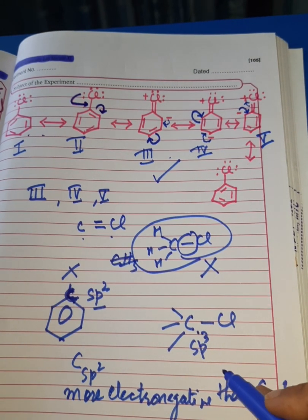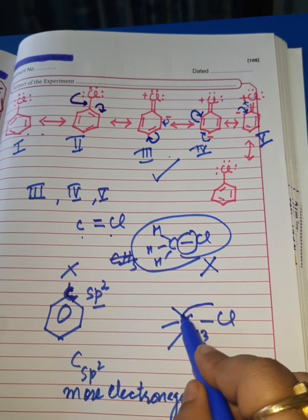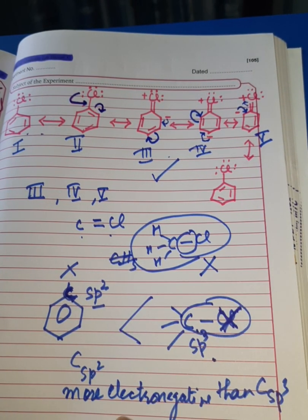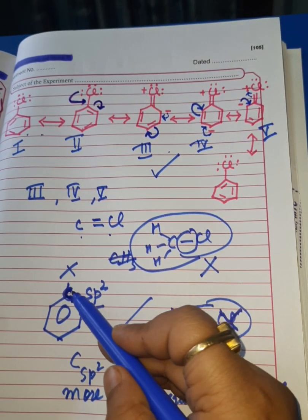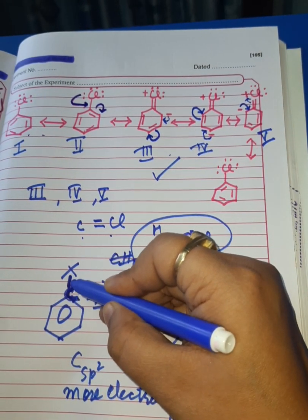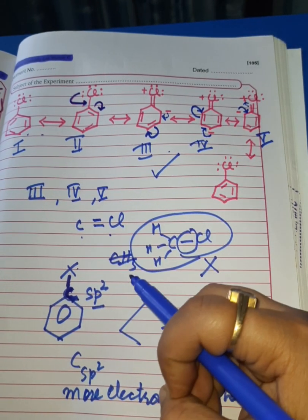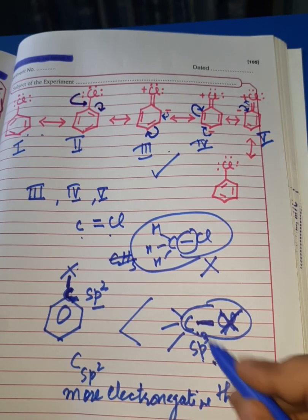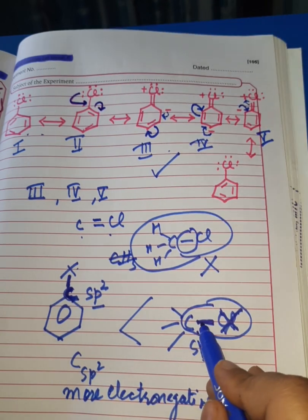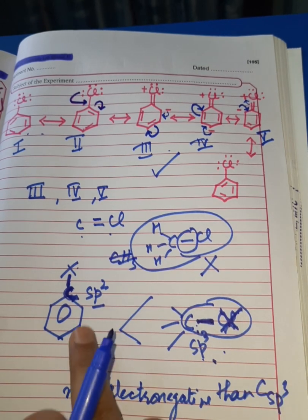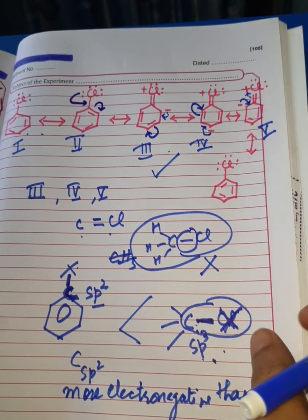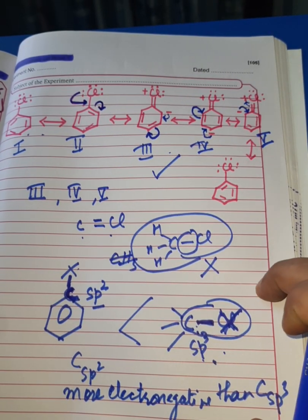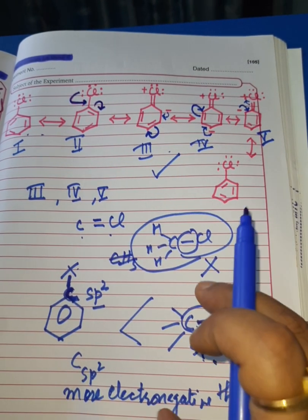In haloarenes, since the sp2 hybridized carbon is more electronegative, it will hold the shared pair of electrons of the C-X bond more firmly and more strongly. Whereas in haloalkanes, the sp3 hybridized carbon, because of its lesser electronegativity compared to sp2 hybridized carbon, will not hold the shared pair of electrons of the C-X bond as firmly as in the case of haloarenes. So the hybridization state of carbon also contributes to the lesser reactivity of haloarenes.